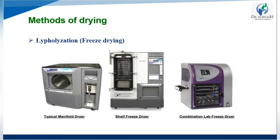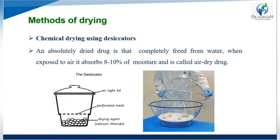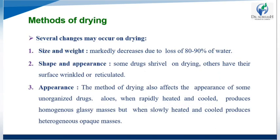Lyophilization or freeze drying machines have three types: manifold dryer, self-freeze dryer, and combination lab freeze dryer. They combine both freezing and drying processes. Chemical drying using a desiccator produces absolutely dry drugs, completely freed from water. When the drug is then exposed to air, it absorbs 8 to 10 percent moisture — this is called air-dry drug.